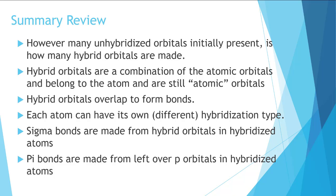Sigma bonds are made from hybrid orbitals in hybridized atoms. So sigma bonds can also be made from s and p orbitals if those aren't hybridized. Pi bonds are made from the leftover p orbitals in hybrid atoms or just the p orbitals in unhybridized atoms.